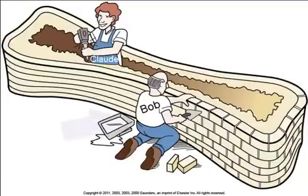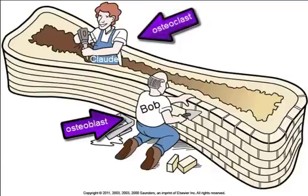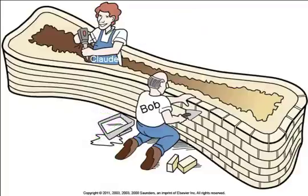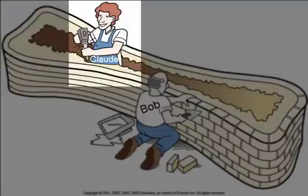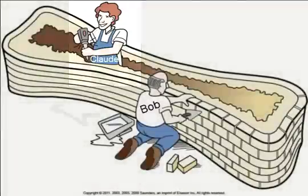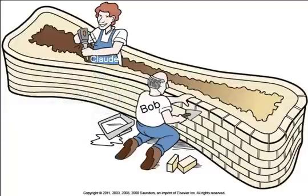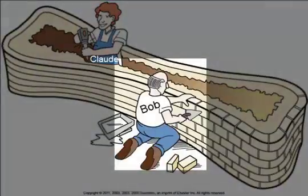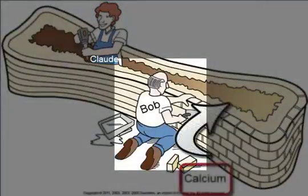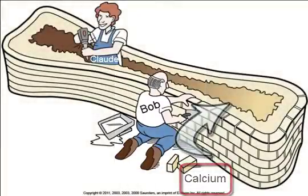So the idea here is that osteoblasts build new bone and osteoclasts break down bone. If the blood calcium level is very low, Claude gets overtime — because he's releasing calcium from the bone and putting it back into the blood. There are two hormones that work together to maintain our calcium balance: one puts Claude on overtime, the other puts Bob on overtime. If our calcium levels in the blood are very high, Bob goes to work — he takes the blood calcium and puts it into the bone.